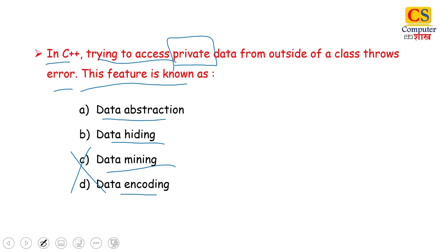If you have seen the C++ topic-wise MCQs video, this question was covered very well. The link is in the description box. Abstraction means you show the important properties or details and hide all the background details. Whereas data hiding means you are keeping access to something restricted — you can prohibit the data access. So the right answer is Data Hiding.